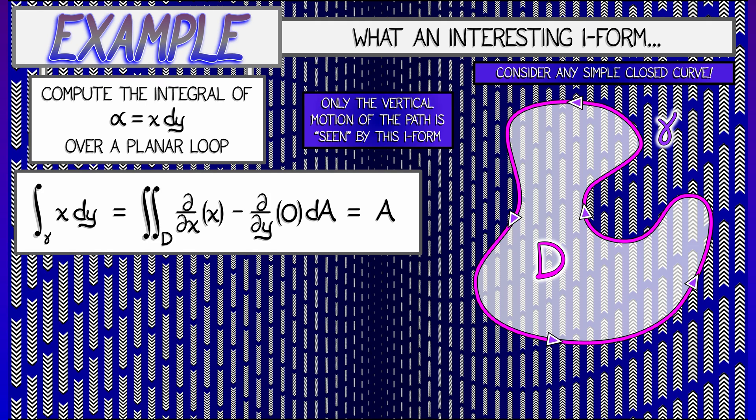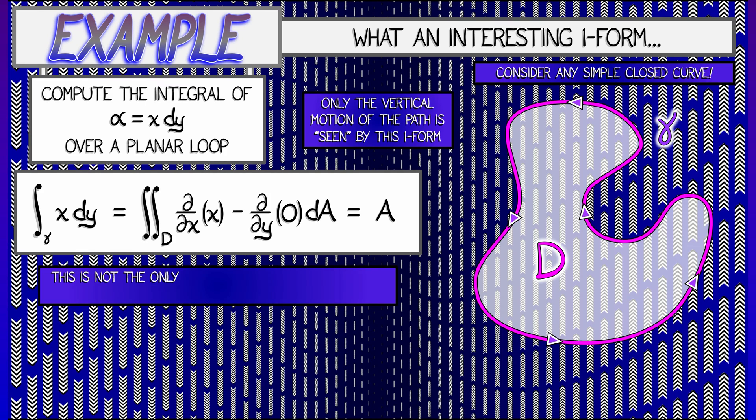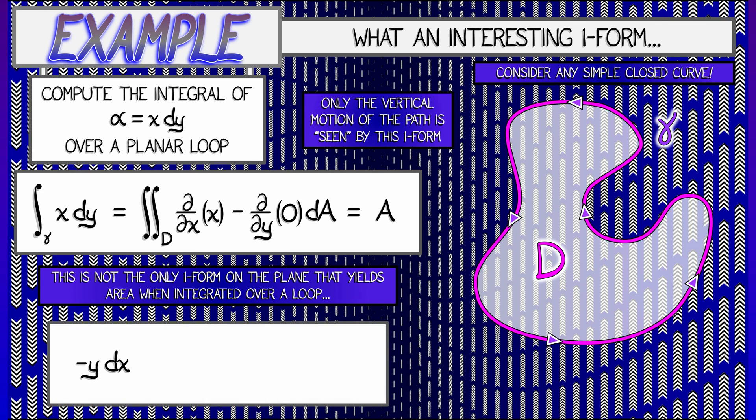So we see this works not just for rectangles, not just for circles. This works for any region in the plane, and this is not the only one-form that has that property. Consider minus y dx or one-half xdy minus one-half y dx. Both of these have that property, as you can check.